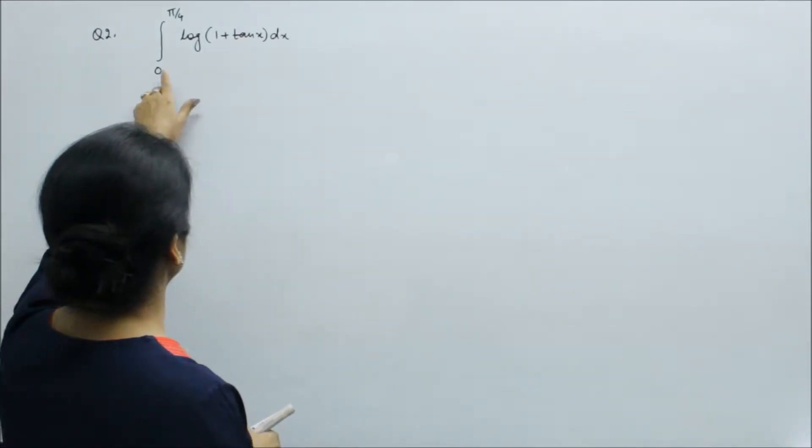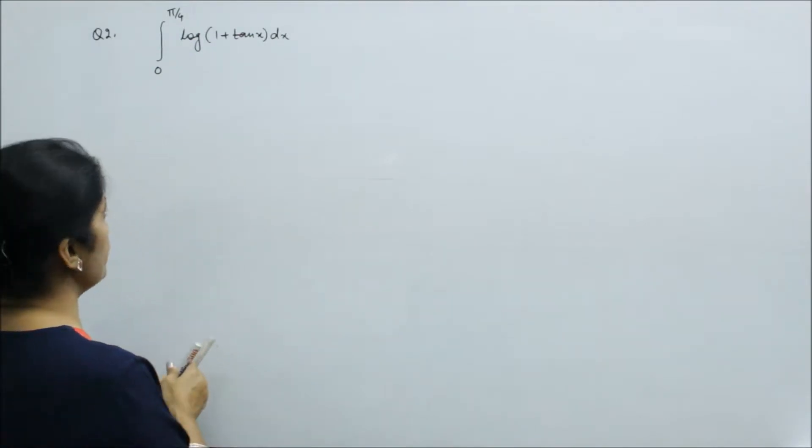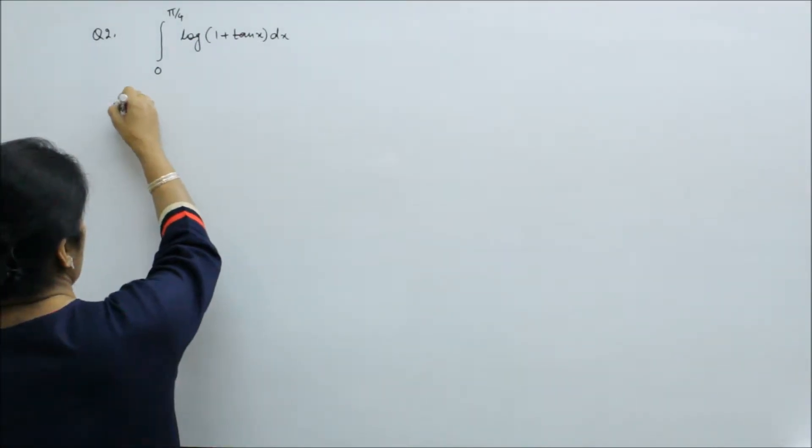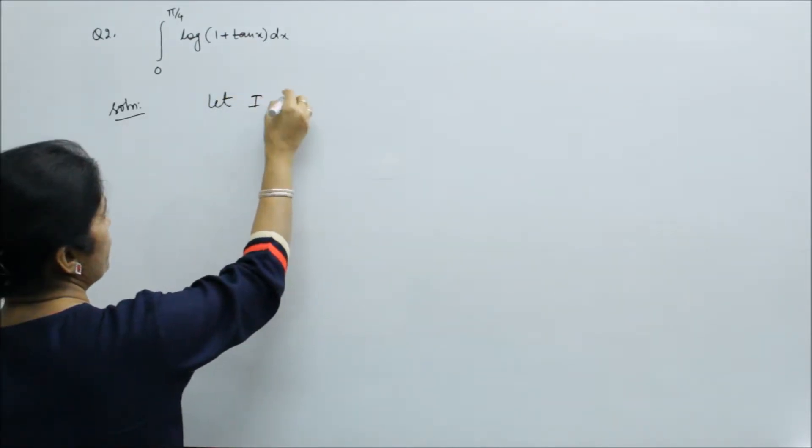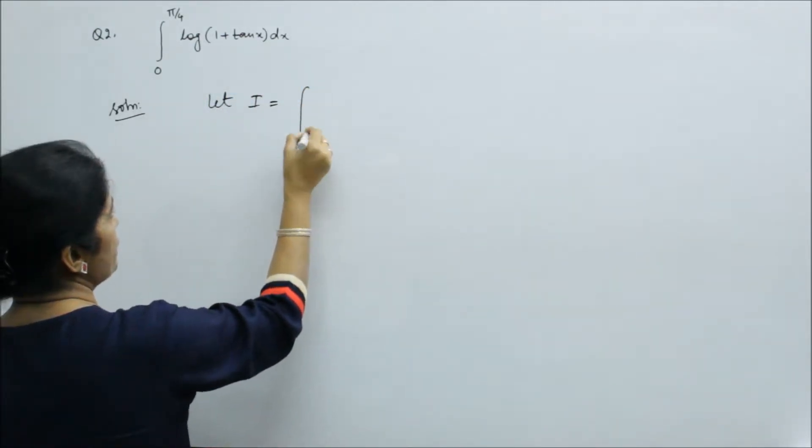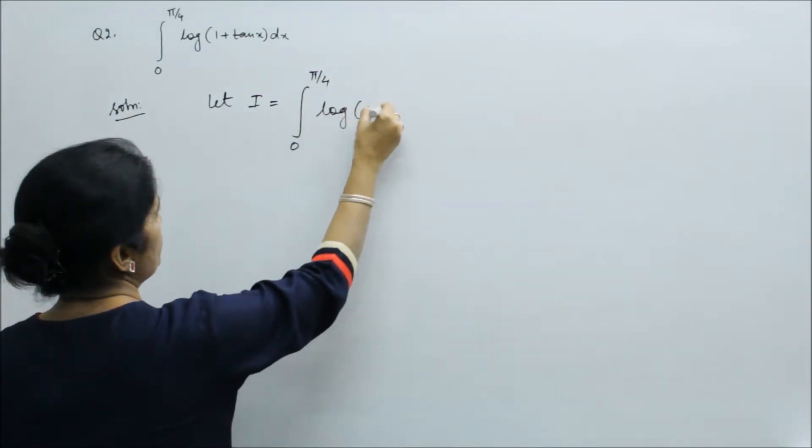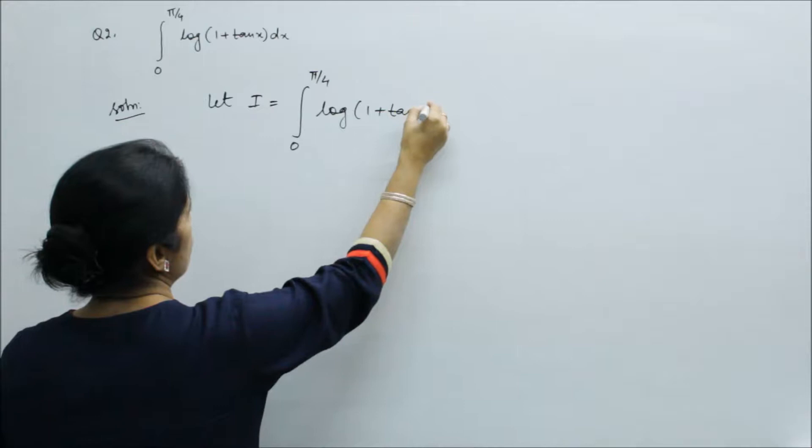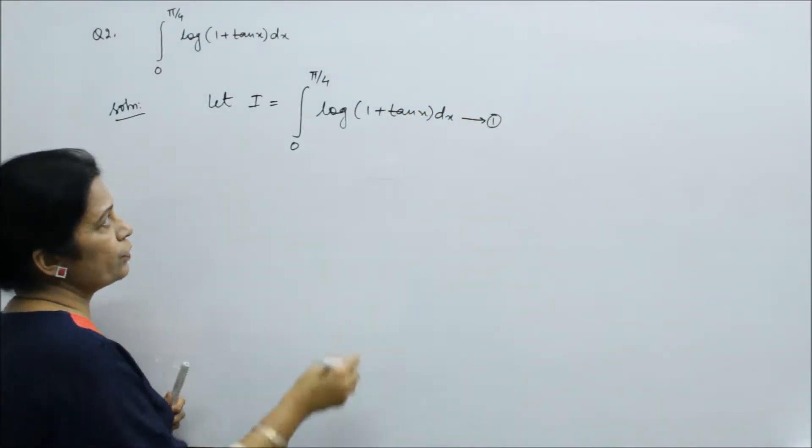So here we have written 0 to π by 4, log(1 + tan x) dx. So we will evaluate this. Let the integral be denoted as I. This is a very important question. It is very repeated in boards. So let's see the steps. The given equation is first.